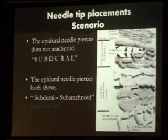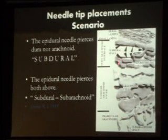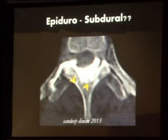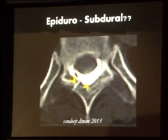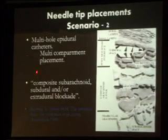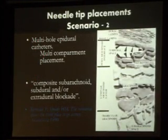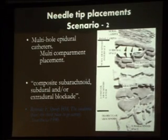There are several needle-tip placement scenarios: the epidural needle pierces the dura but not the arachnoid, ending in the subdural space; or it pierces both, entering the subdural and subarachnoid space simultaneously. In one image you can see contrast delineating the roots — that is definitely epidural — but a few centimeters above, the catheter comes from the thoracic area with a small gap: one area is epidural space and the other is subdural space. Since it is a multi-hole catheter, one hole can lie in the epidural and another in the subdural space. This is called a composite subarachnoid-subdural block, which can be dense but can produce serious problems in the perioperative period.